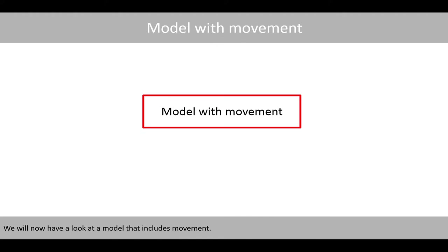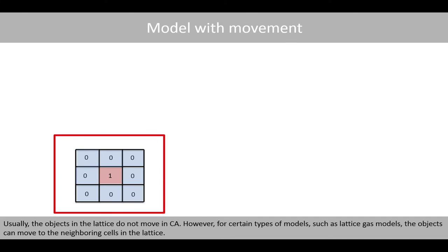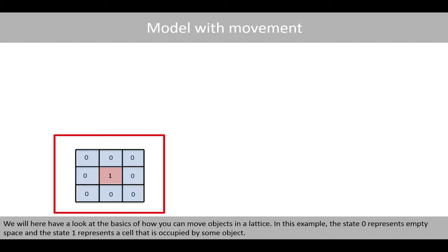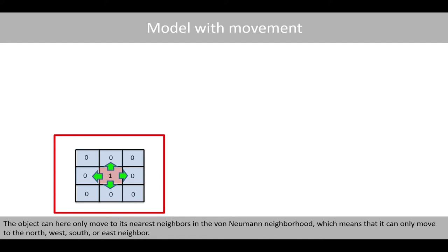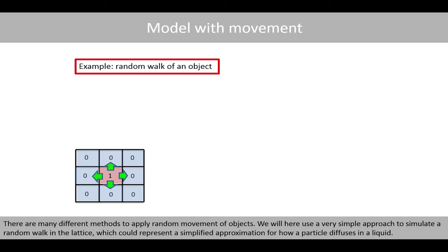We'll now have a look at a model that includes movement. Usually, the objects in the lattice do not move in cellular automata. However, for certain types of models such as lattice gas models, the objects can move to the neighboring cells in the lattice. We will here look at the basics of how you can move objects in the lattice. In this example, state 0 represents an empty space and state 1 represents a cell occupied by some object. The object can only move to its nearest neighbors in the von Neumann neighborhood — north, west, south, or east. We will use a simple approach to simulate a random walk in the lattice, which could represent a simplified approximation for how a particle diffuses in a liquid.